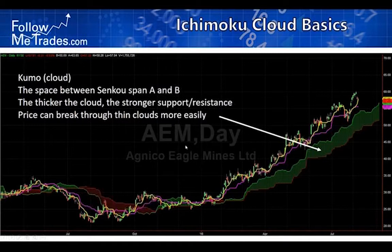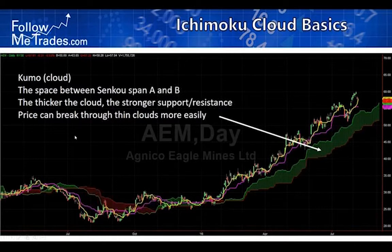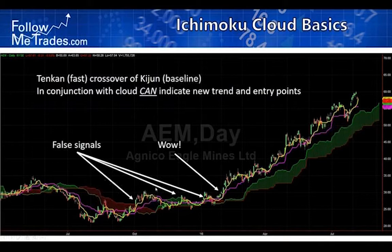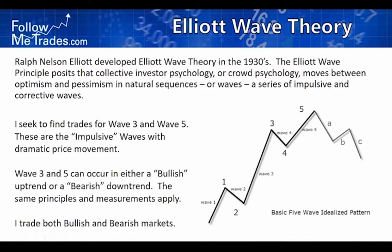The cloud predicts support and resistance in trends. It can tell you when you're in a trend: when price breaks above the cloud and you get a fast-over-slow crossover, a trend has started. You can see on this AEM chart the cloud predicted some good support areas — even though price pulled back to it, the trend continued. Eventually when the trend changes, price will bust through the cloud. Crossovers can indicate trend beginnings but may produce false signals.